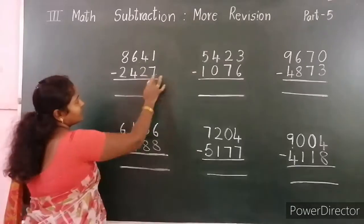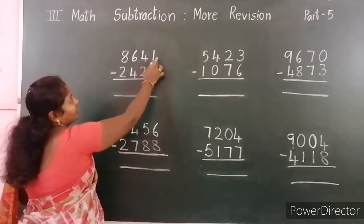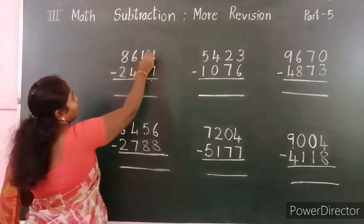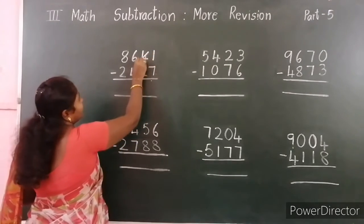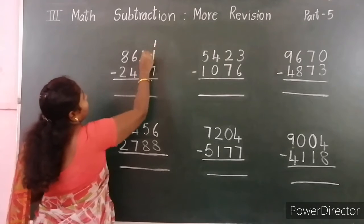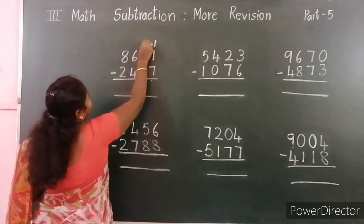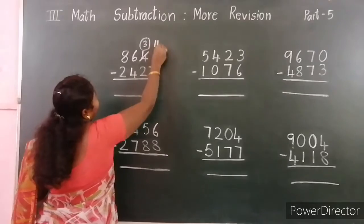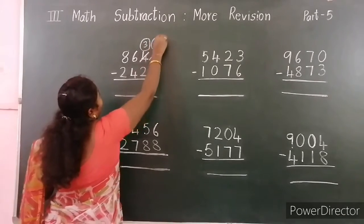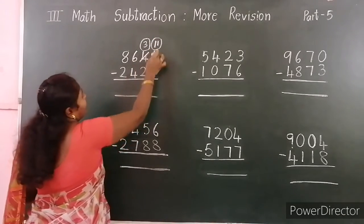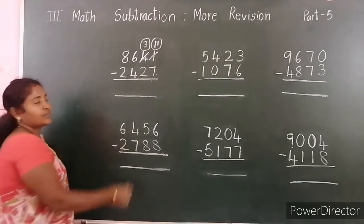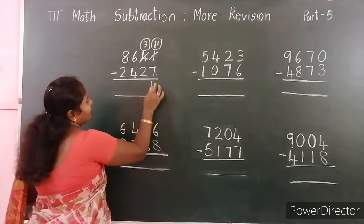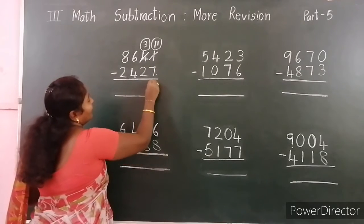1 minus 7. 1 is smaller than 7, so borrow from the next place. 3 left, here 11. Now 11 minus 7 — the difference is 4.